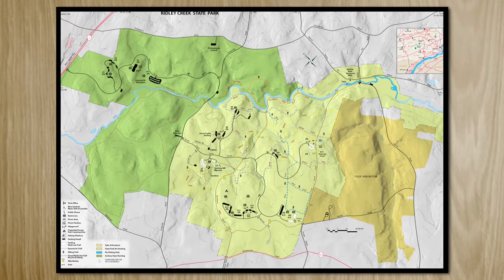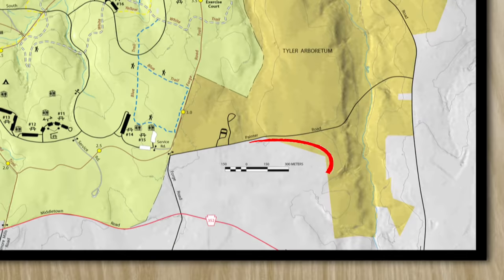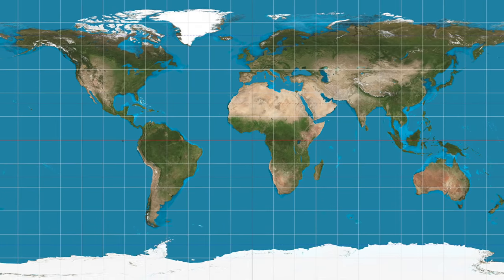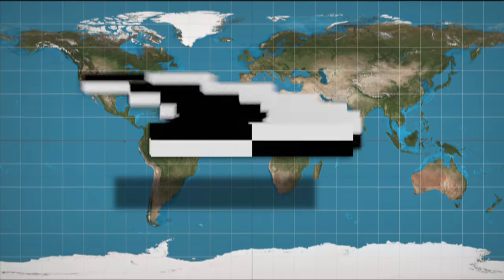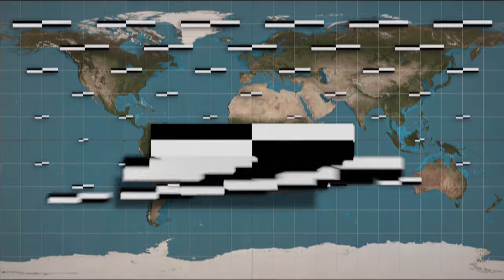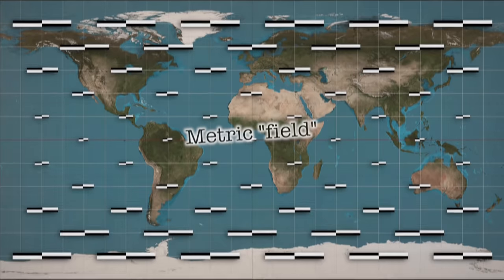Now, you're probably used to a map having only one bar scale. But a map of something like the Earth actually requires a bar scale at every single point, since distances and areas everywhere are continuously being distorted.